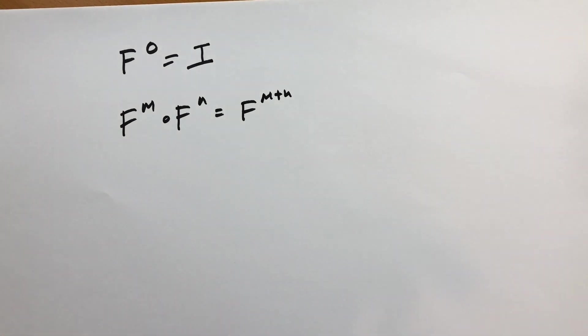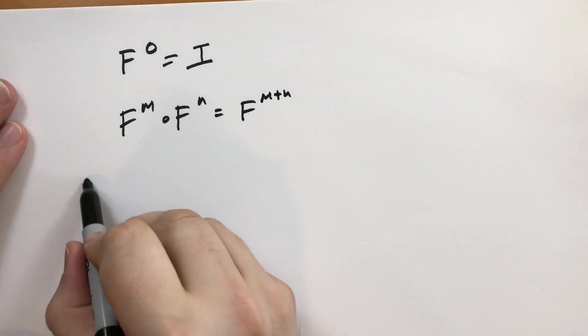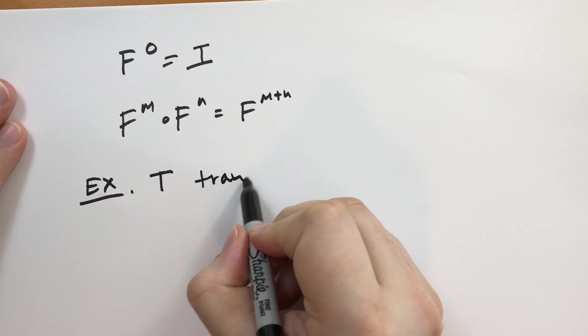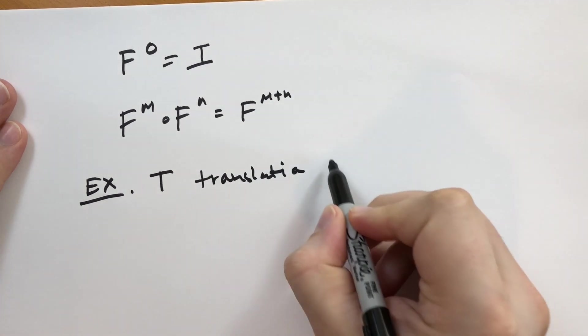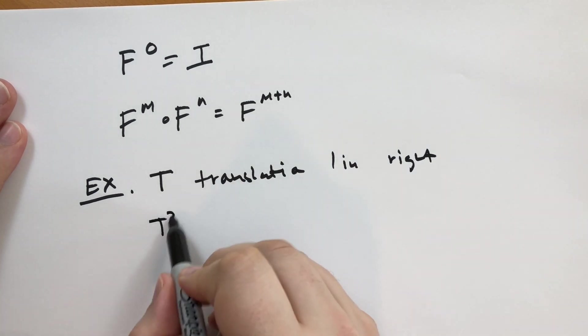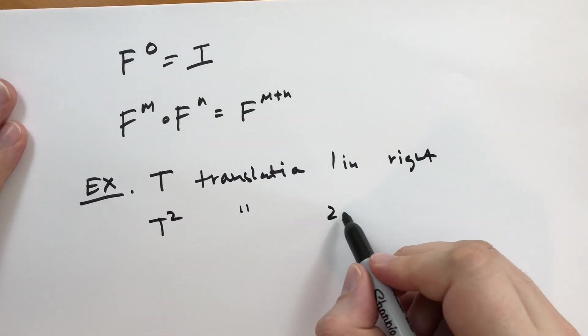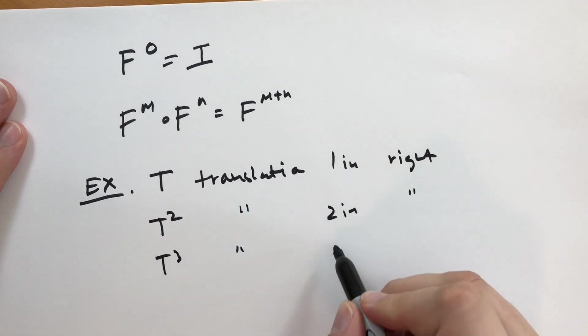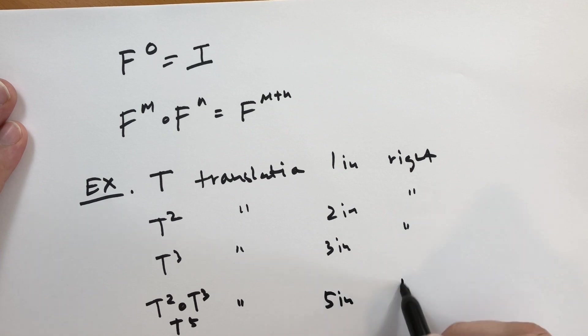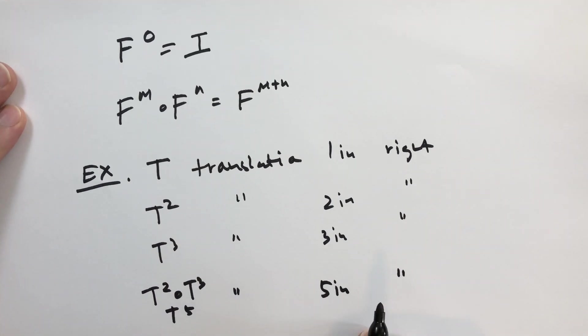So we're going to take as a final example, let's suppose T is a translation one inch to the right. So T squared, what would that be? That would be a translation two inches to the right. And T cubed would be the translation three inches to the right. And T squared composed with T cubed, that's the same as T to the fifth. This is the translation five inches to the right.